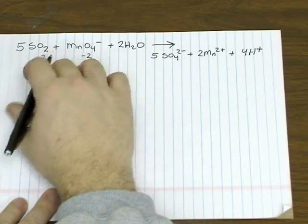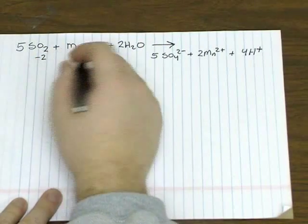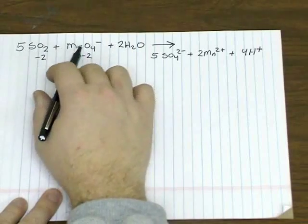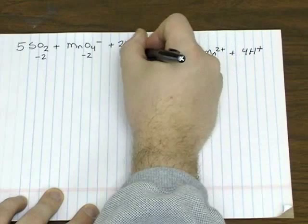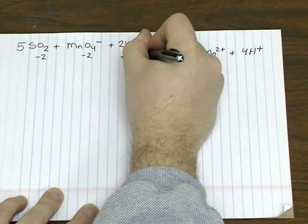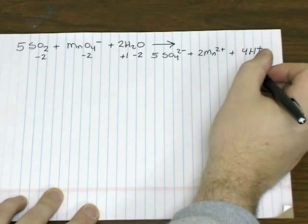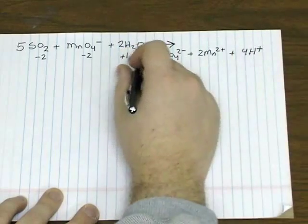Oxygen for our first two reactants are going to be negative two each. We'll use the sum rule to find sulfur and manganese like we did before. In our last example, we figured out the oxidation numbers of water as plus one and negative two.